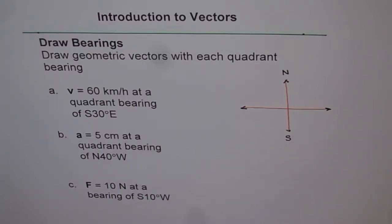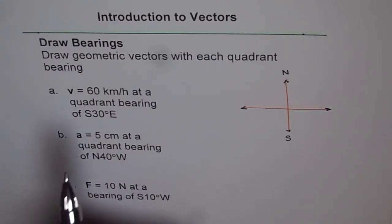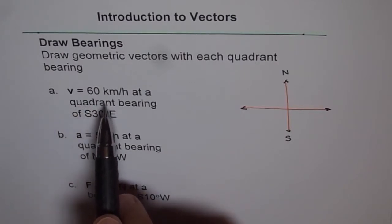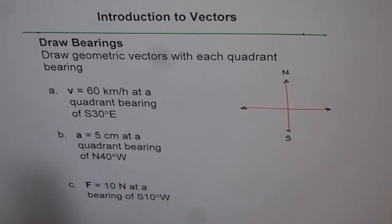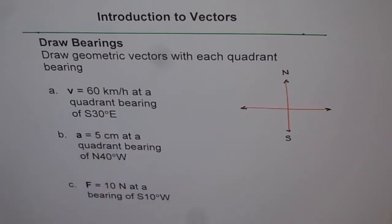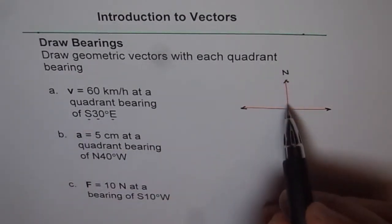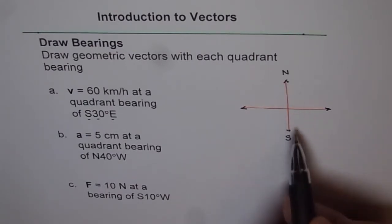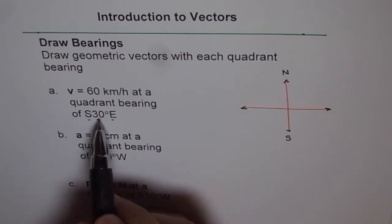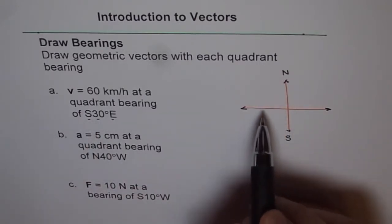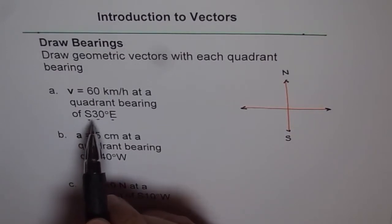We have three different examples by which we will understand how to represent vectors when their quadrant bearing is given to us. Example A: V equals 60 kilometers per hour at a quadrant bearing of 30 degrees east of south — that is how we read this. Quadrant bearing has three components. This first part tells us from the north-south line which end we are referring to — north or south. 30 degrees is the amount of angle toward east or west. So that is the meaning of S 30° E.